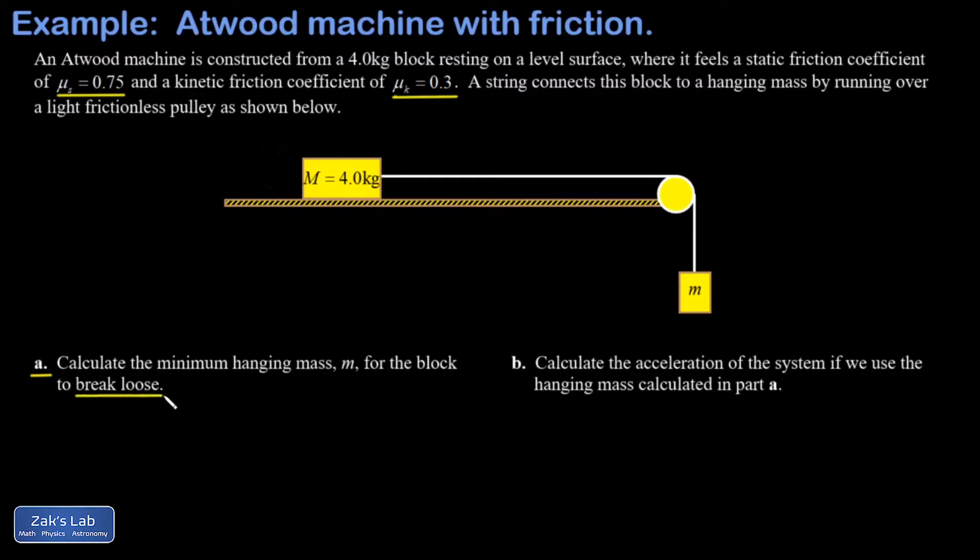Whenever you see that phrase 'breaking loose,' you know we're talking about exactly the moment where the static friction force is at its maximum value. That allows you to use the formula: static friction maximum value is the coefficient of static friction times the normal force.